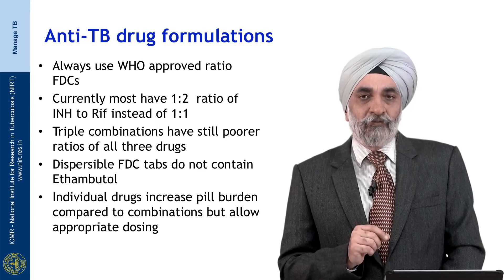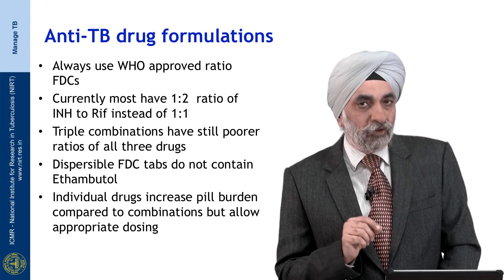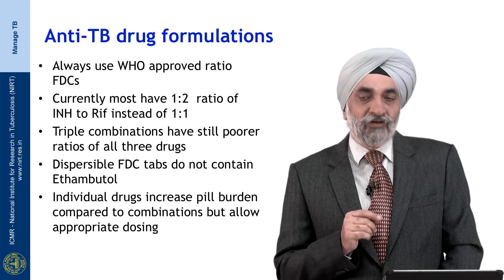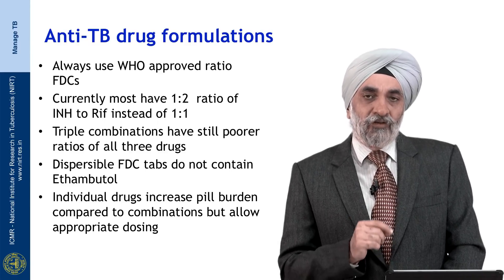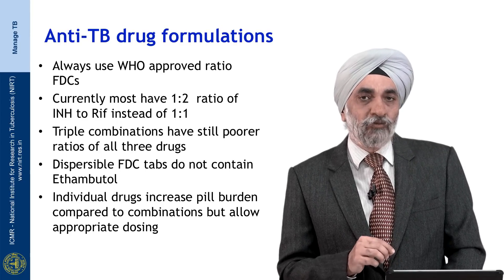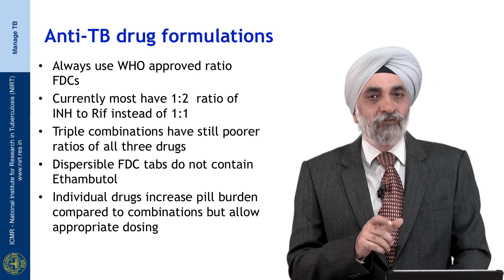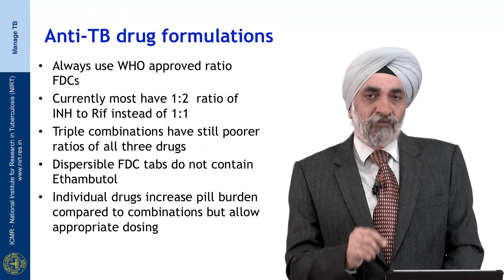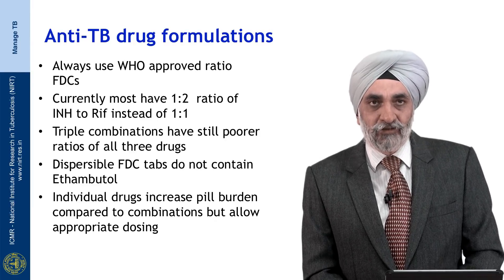While 4-drug FDCs are available for adults, they are not available for children because ethambutol is a hygroscopic drug and most pediatric FDCs are dispersible tablets — you cannot add ethambutol to these dispersible tablets. So in children, ethambutol must be given separately. You would get a triple combination FDC of rifampicin, INH, and pyrazinamide, and remember to use it in the right ratio as mentioned.